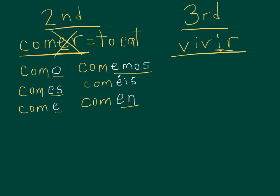So those are the endings for regular second conjugation verbs. If I want to do a regular third conjugation verb, like the verb vivir, vivir means to live. I'm going to follow my same rules about how I conjugate.